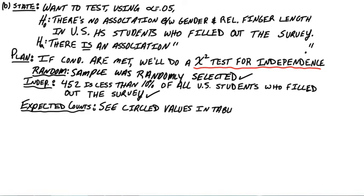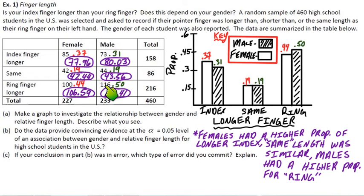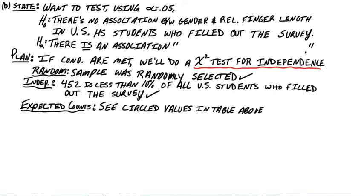We'll add the expected counts to the table as circled values. Using row total times column total divided by table total: the first cell gives 77.96, then 42.44, 106.59, and on the other side 80.03, 43.56, and 109.41. Those are our expected counts. They're all at least five, so the large counts condition is met.